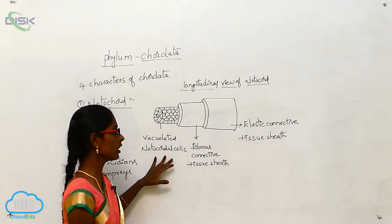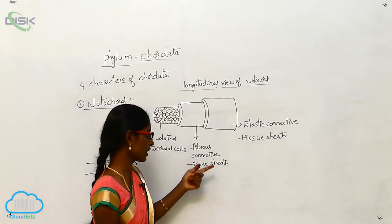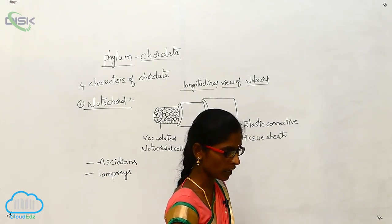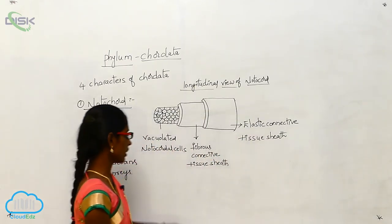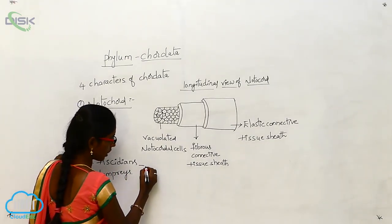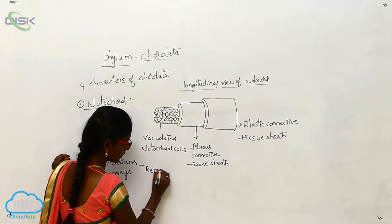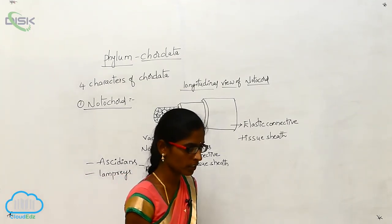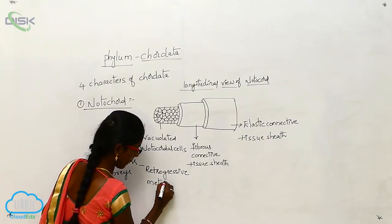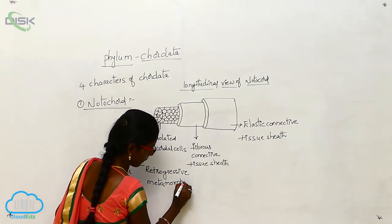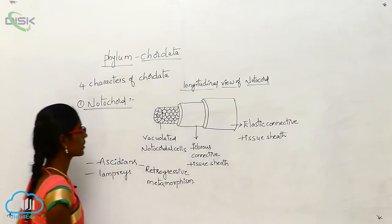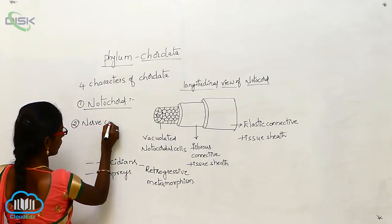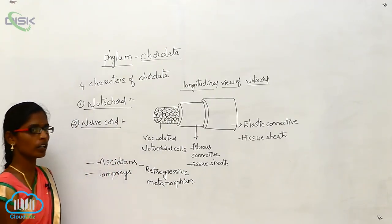The phylum Chordata includes four characters, the first being the notochord. In the transverse and longitudinal view of the notochord, the vacuolated notochord cells are covered by the fibrous connective tissue, which is covered by the elastic connective tissue. This is present in some urochordates, and these urochordates undergo retrogressive metamorphosis.